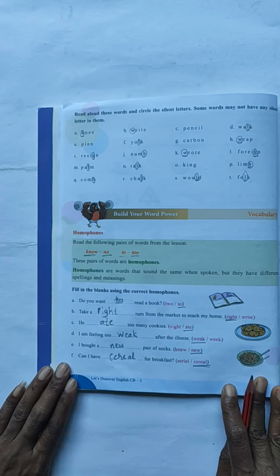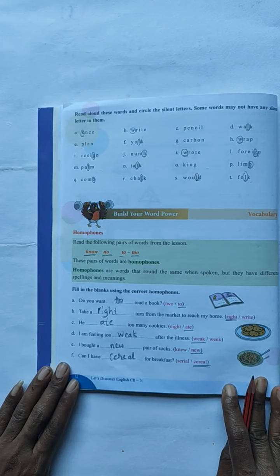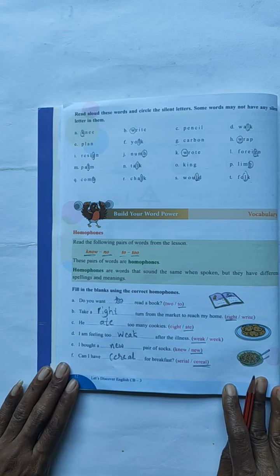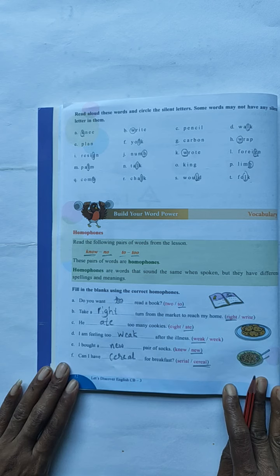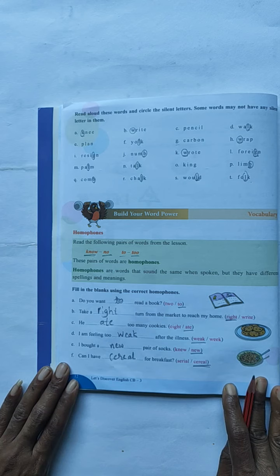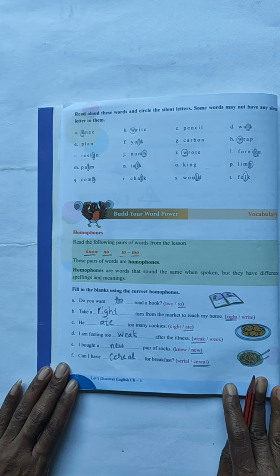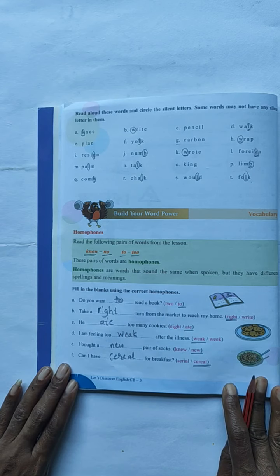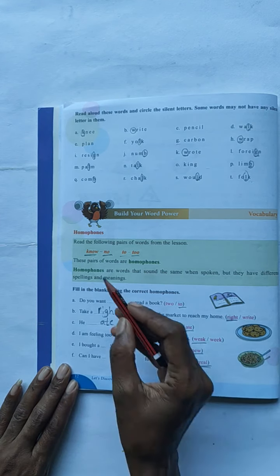Homophones. Read the following pairs of words from the lesson. K-N-O-W, N-O. T-O-2, T-O-O-2. These pairs of words are homophones. Do you know children what do you mean by homophones? Yes. Homophones are words that sound the same when spoken, but they have different spellings and meanings.